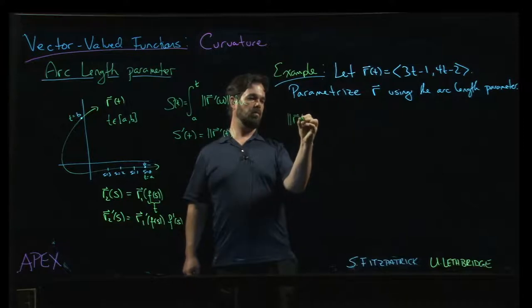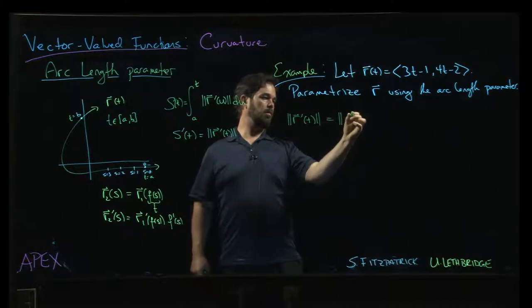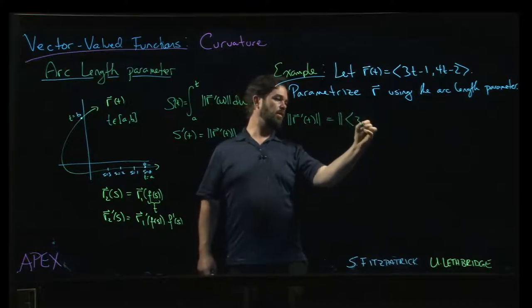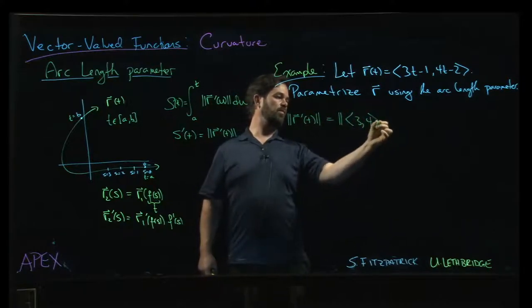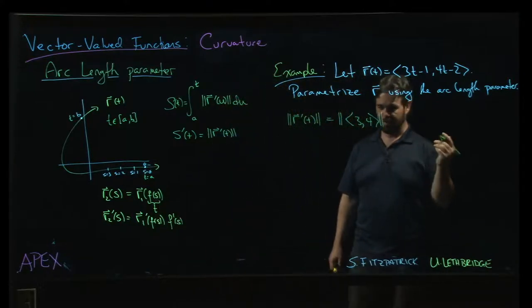If we look at what is the magnitude of r prime? Well, r prime is the vector 3, 4. So r prime happens to be a constant vector in this case. Of course, that's usually not going to be the case.